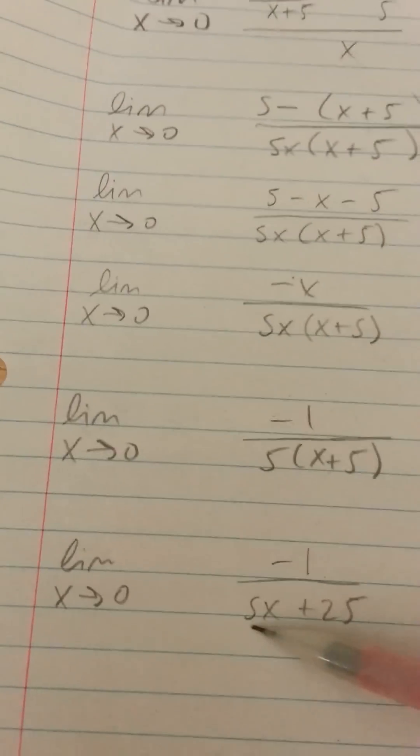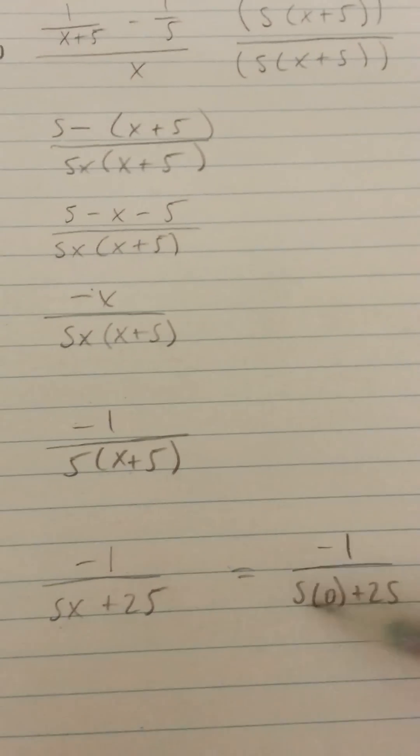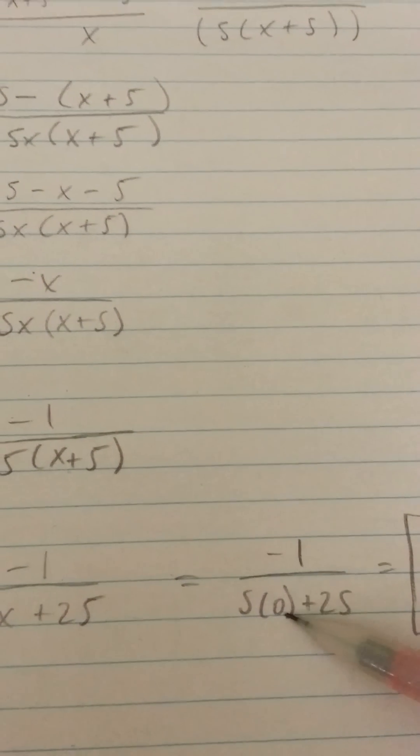At this point it's safe to plug in a 0 because we're not going to end up with a 0 in the denominator. So when we do that now we can stop writing the limit as x approaches 0 because we're actually doing the calculus portion of it.